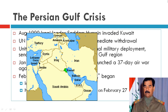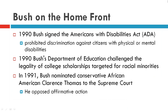Here is a map showing Iraq with Kuwait next to it, and Saudi Arabia where the American and United Nations forces launched their attack from. In 1990, Bush signed the Americans with Disabilities Act (ADA), which prohibited discrimination against citizens with physical or mental disabilities.